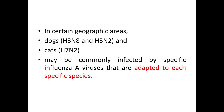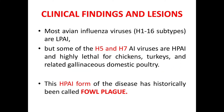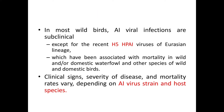Most avian influenza virus subtypes (H1–H16) are LPAI. H5 and H7 AI viruses are HPAI and highly lethal for chickens, turkeys, and related gallinaceous domestic poultry. This HPAI form of disease has historically been called fowl plague. Clinical signs, severity of disease, and mortality rates vary depending on the AI virus strain and the host species.